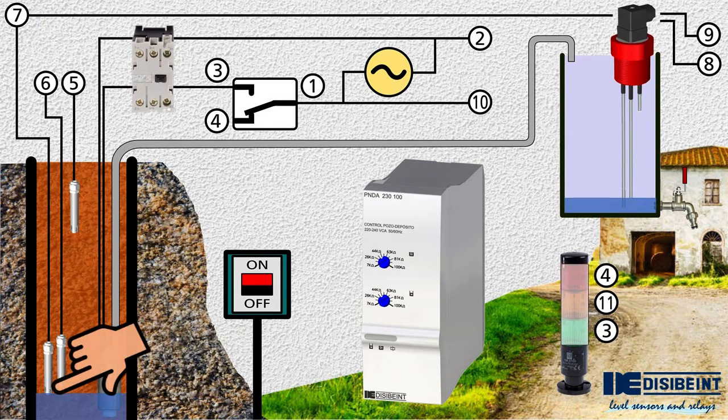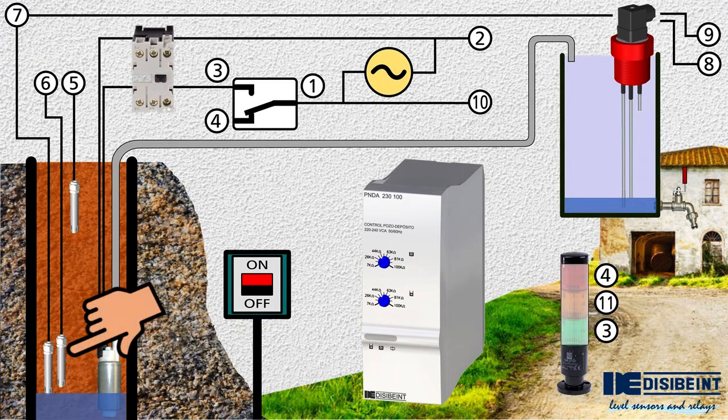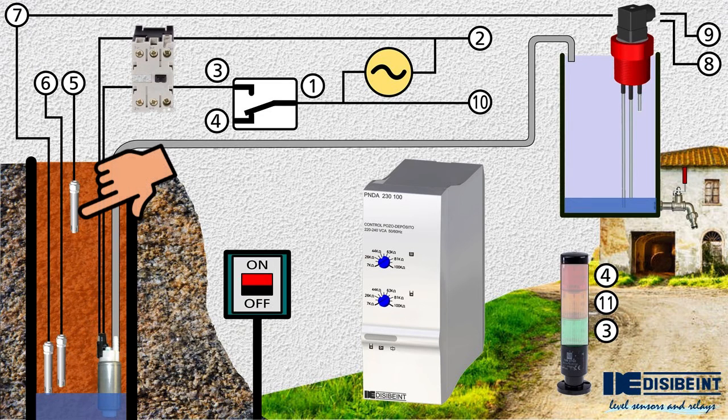One of them, the one located in the lowest part, is called reference since it is the one that closes the electrical circuit with the other two and must always be in contact with the water. The minimum probe must be placed slightly above the previous one and it is the one that will stop the pump in case of lack of water. The maximum probe is the one that will enable the pump so that it can start up once there is enough water in the well.